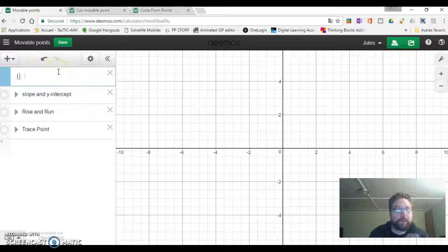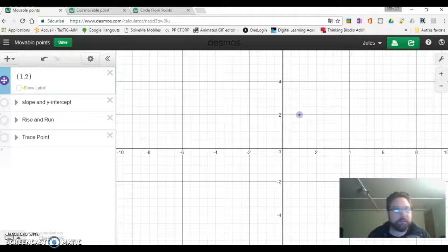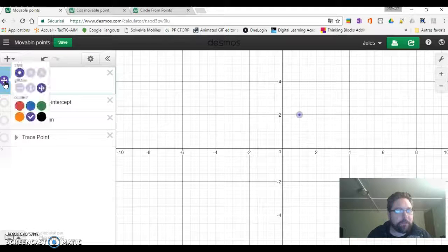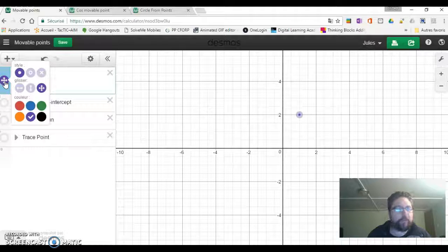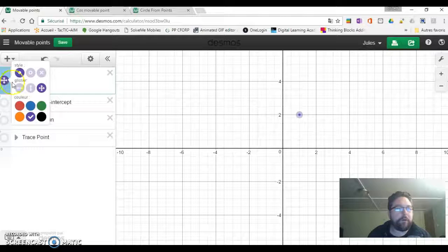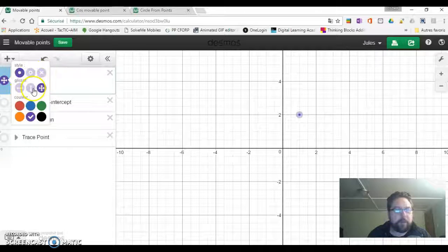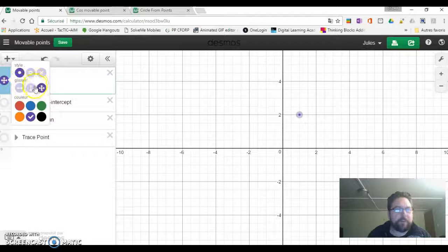If we create a point, let's say 1 and 2, we'll notice that there's a little graphic here that shows up. When you hold on it, you can change the color, but you can also change the style, and you can also change how it slides.